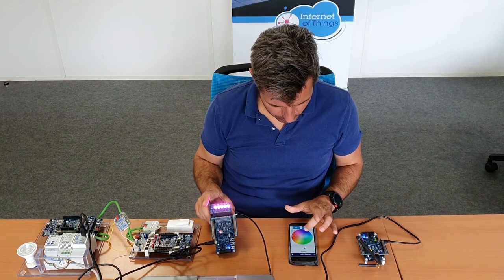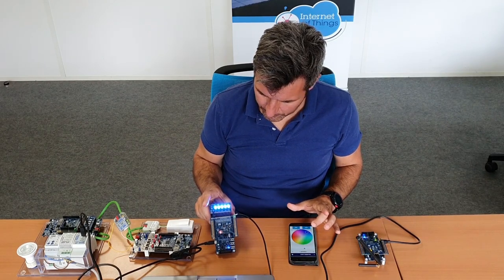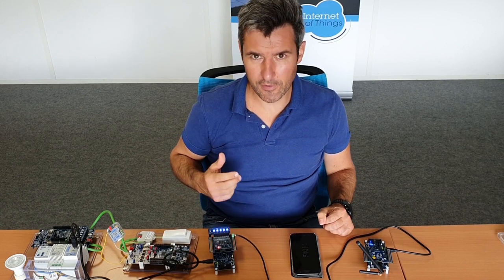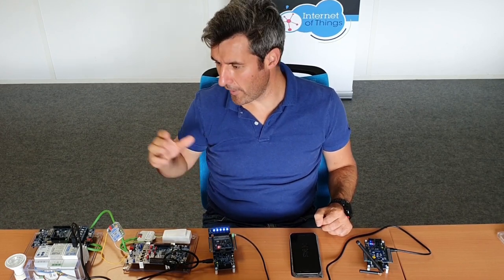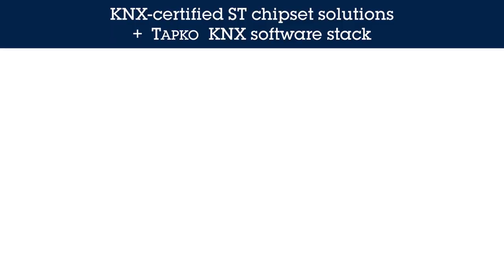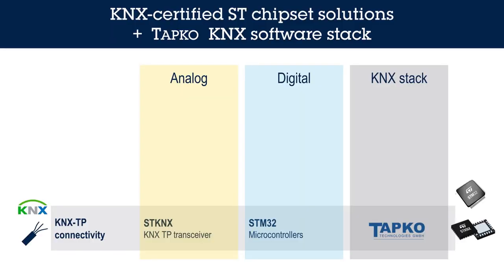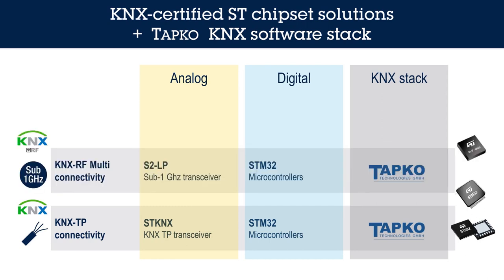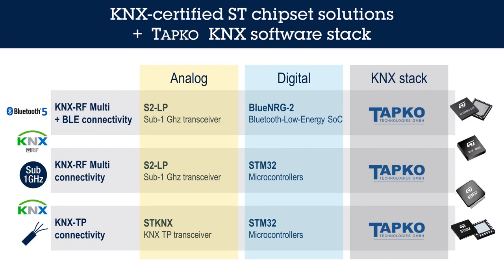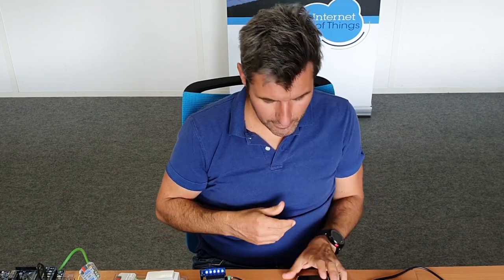As a conclusion, today we have demonstrated that ST is able to provide solutions for both KNX bus using twisted-pair wired connectivity and KNX RF solutions using S2LP sub-GHz. We are also able to enhance wireless connectivity through BLE, showing that a simple push-button application can be improved with BLE connectivity and a smartphone application.